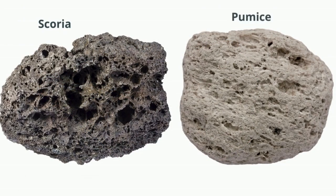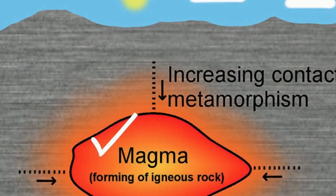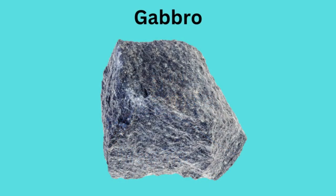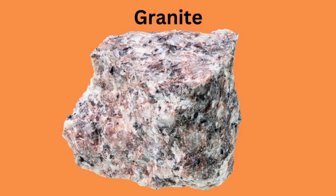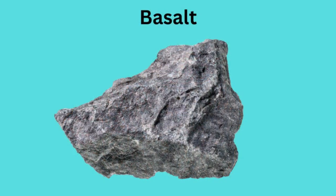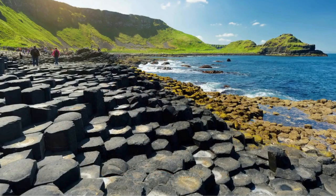Molten rock that stays inside the earth is called magma and creates intrusive igneous rocks. Examples include gabbro, granite, and basalt. The Giant's Causeway is a result of molten basalt reaching the surface and creating these geometric rocks.